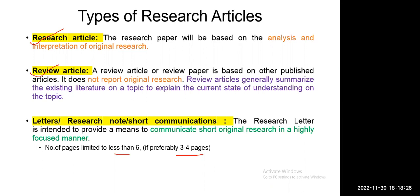The weightage is the same for all types of articles — even if you publish a research article, review article, or letters, short notes, or short communications. In the API score, the academic progress score, the weightage is the same for all these types of publications.